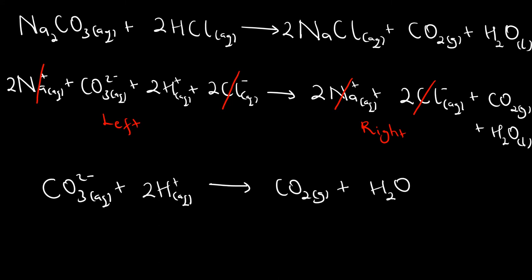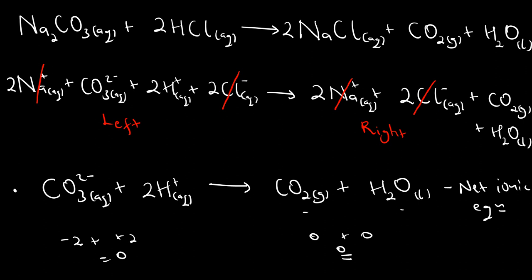The net ionic equation shows exactly what happens in the reaction — it is the carbonate ions from sodium carbonate that react with hydrogen ions to form carbon dioxide and water. We also verify that charges are balanced: on the left, negative 2 plus positive 2 equals 0, and on the right, 0 plus 0 equals 0. So the charges are equal on both sides.